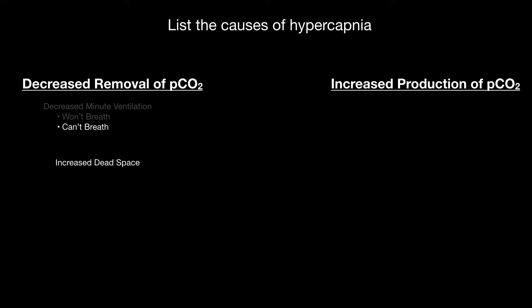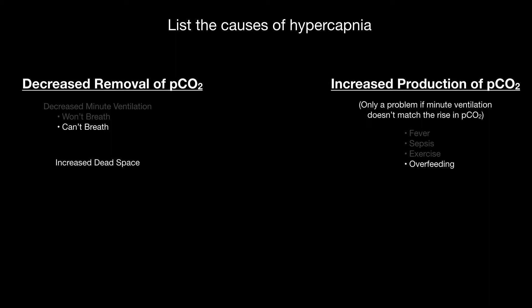With regards to increased production of CO2, this is only going to be a problem if the minute ventilation doesn't rise to match the rise in PCO2. This happens particularly when patients are already sick and struggling to meet their minute ventilation. It can occur with fever, sepsis, exercise, or overfeeding. In the ICU, a mechanically ventilated paralyzed and sedated patient who develops a fever will have their PCO2 rise because the body is producing more carbon dioxide.